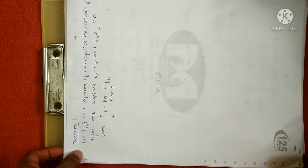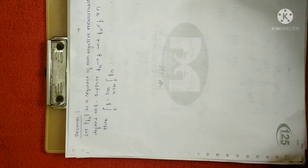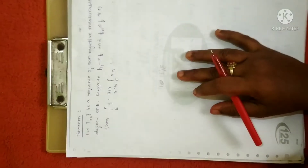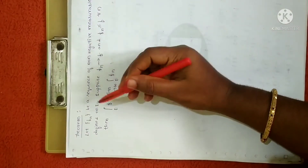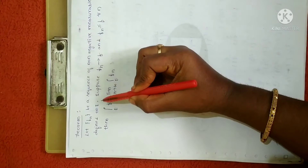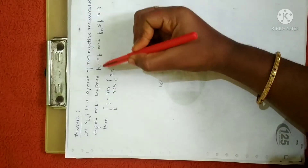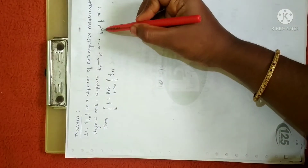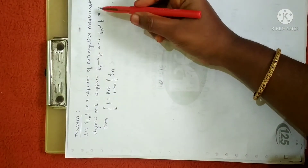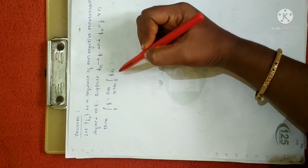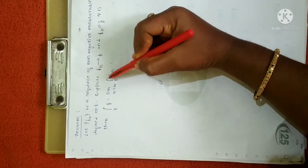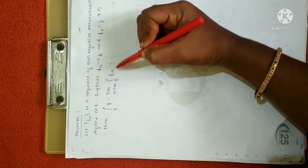Hello everyone. In this session let me continue a few more theorems in unit 4. Here is the theorem: if fn is a sequence of non-negative measurable functions defined on E, and suppose fn converges to f and fn is less than or equal to f for all n, then the integral over E equals the limit as n tends to infinity of the integral over E of fn.